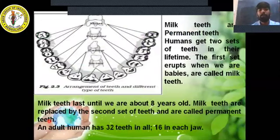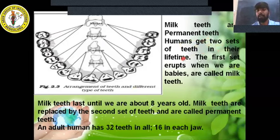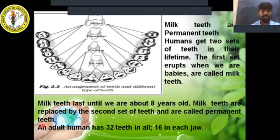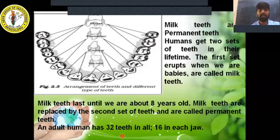Humans get two sets of teeth in their lifetime. The first set, which erupts when we are babies, is called milk teeth, lasting until about 8 years old. They are then replaced by the second set called permanent teeth. An adult human has 32 teeth in all - 16 in the upper jaw and 16 in the lower jaw.